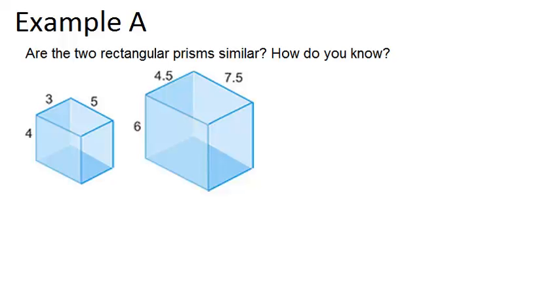So the two rectangular prisms will be similar if all of their corresponding sides, like 4 and 6, or 3 and 4.5, or 5 and 7.5, are in the same ratio. So we should test all three ratios to see if they reduce to the same number, to see if the ratios are equivalent.